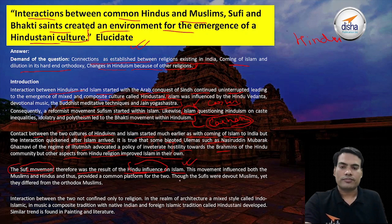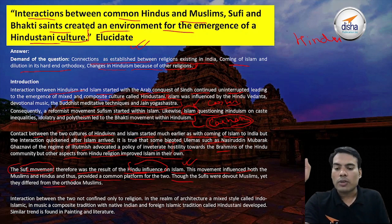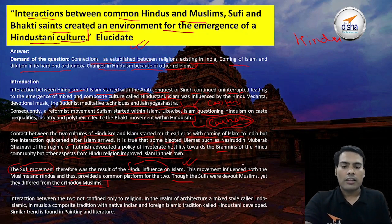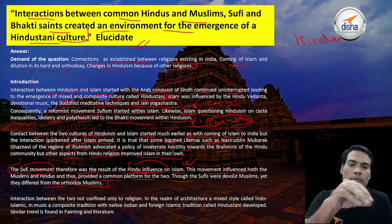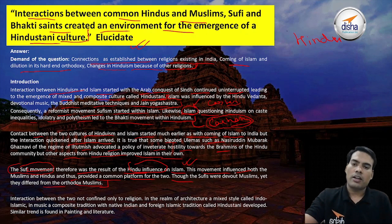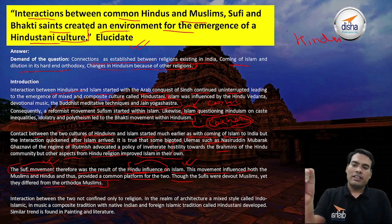The Sufi movement was the result of Hindu influence on Islam. This movement influenced both Muslims and Hindus and provided a common platform for the two. Though the Sufis were devout Muslims, they differed from orthodox Muslims. The ideas of Hindus and Muslims were conjoined, and that conjoined thought was called the Sufi movement — which is why we see the emergence of Hindustani culture from these ideas.